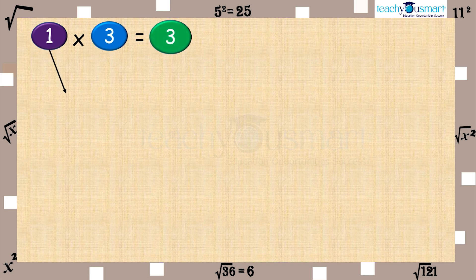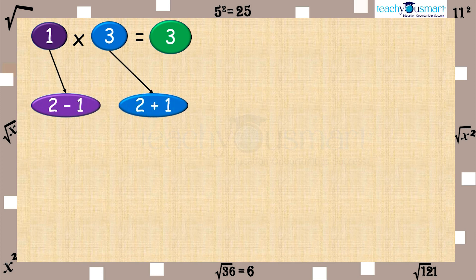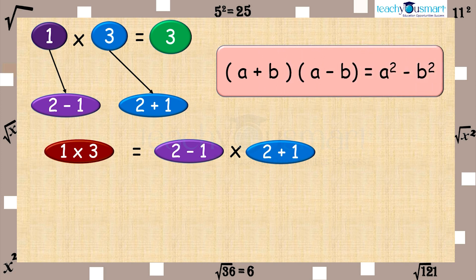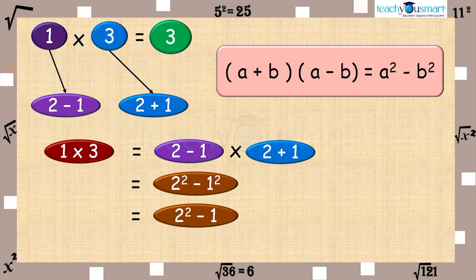We can rearrange 1 as (2 minus 1), and 3 as (2 plus 1). So, 1 multiplied by 3 equals (2 minus 1) multiplied by (2 plus 1), which equals 2 square minus 1 square, equals 2 square minus 1, equals 3.